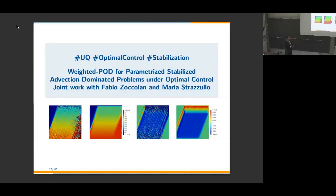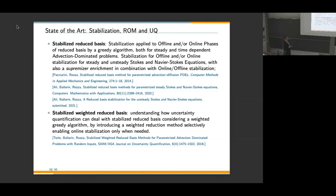Moving to advection-dominated problems with optimal control, we need stabilization for both the state and adjoint problem. The state of the art for stabilization in reduced basis methods includes former work with Paolo Pacciarini, Shafkat Ali, and Francesco Ballarin using offline-only stabilization for basis functions, and offline-online stabilization for the reduced order methods. The need to stabilize these problems when we have a stochastic perspective and random inputs is even higher.